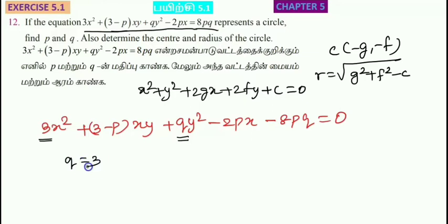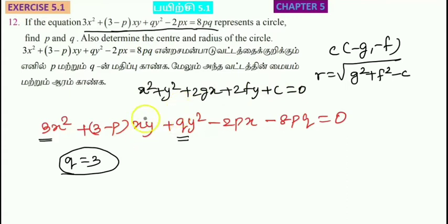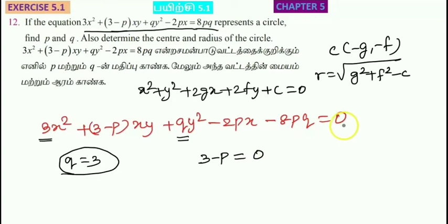We get Q equal to 3. For the P value, there is no XY term, so the XY coefficient equals zero. Therefore 3 minus p equals 0, which gives P equal to 3.